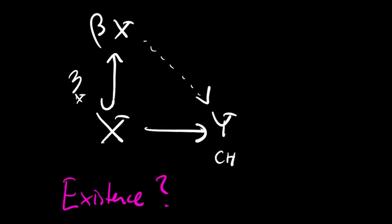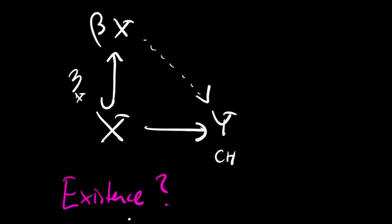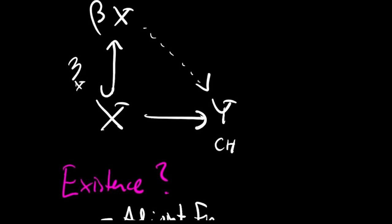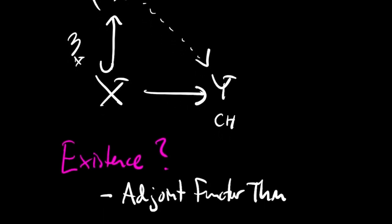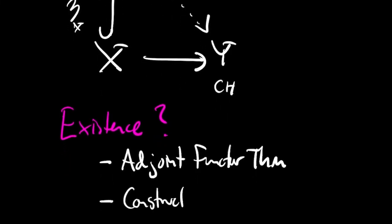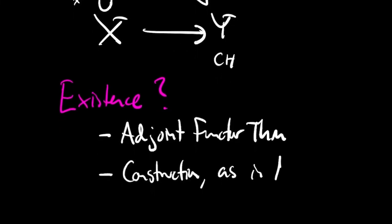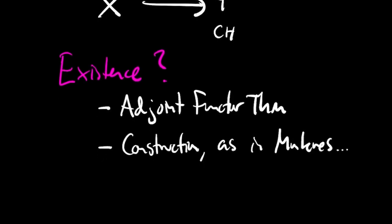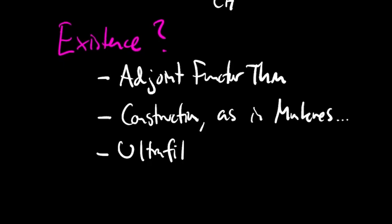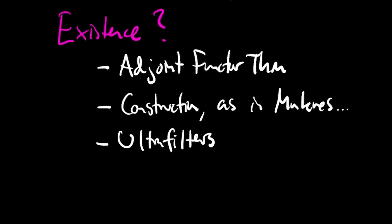In order to prove that the Stone-Čech compactification exists, you have some choices. One is to use an adjoint functor theorem — the hard part being that you must prove certain categorical limits in the category of compact Hausdorff spaces exist, such as products, which is something like Tychonoff's theorem. For another proof of existence, you can do a point-set construction and prove it has all the right properties, as done for example in Munkres. As a third option, you can see the Stone-Čech compactification as the space of ultrafilters on X — the set of ultrafilters carries a topology something like the Zariski topology on Spec of a ring, with a natural map from X sending each point to its principal ultrafilter.